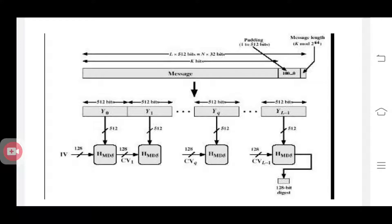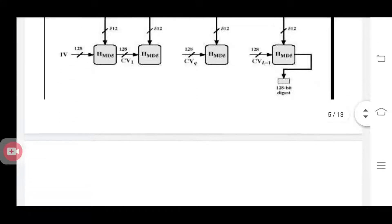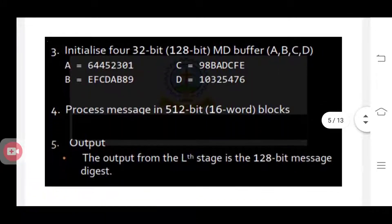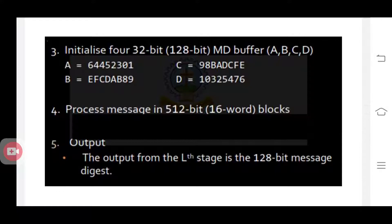So the first two steps: append some padding bits and append some 64 bits. The third step, you are using some buffers — MD buffers. Why are you using MD buffers? You are using 4 MD buffers, that is A, B, C, D. The use of these buffers is to store the output value. The output of MD5 is a 128-bit digest, a hash value, and for storing that hash value or message digest you are using these 4 MD buffers.